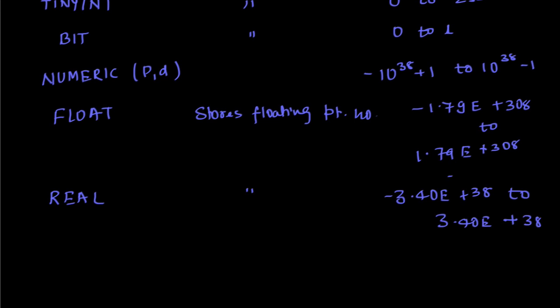These are data types to store integers or numbers. Now we have other data types to store characters, character data types. In character we have CHAR. CHAR stores maximum 8000 characters but it will vary from OS to OS, it will be machine dependent.